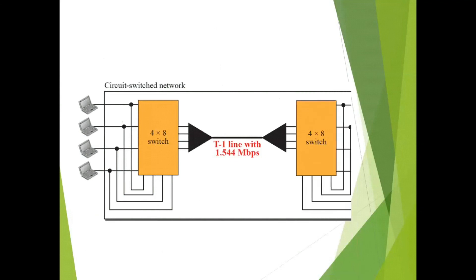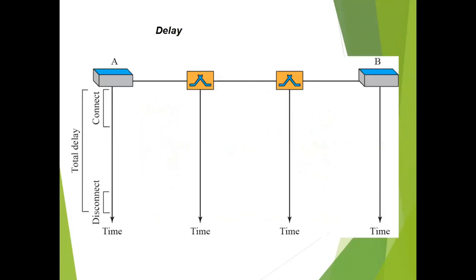In the circuit switching network diagram, you can see how multiplexing and demultiplexing occur. On the left-hand side there is a 4×8 switch with four inputs being fed in and multiplexed onto a common bandwidth T1 line at 1.544 Mbps, which reaches the destination, is demultiplexed, and delivered to the appropriate station. The diagram also illustrates the delays experienced in circuit switching.